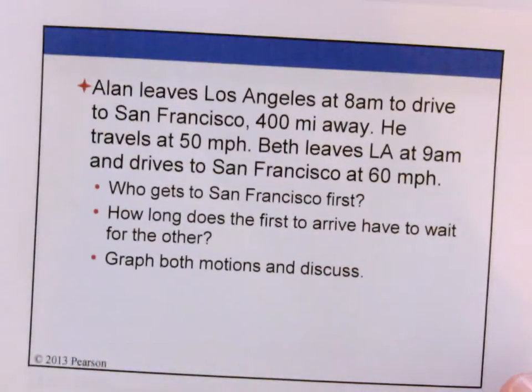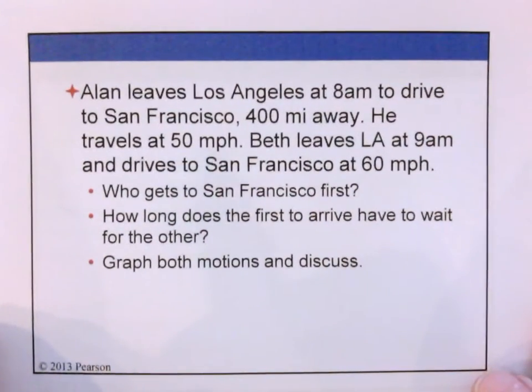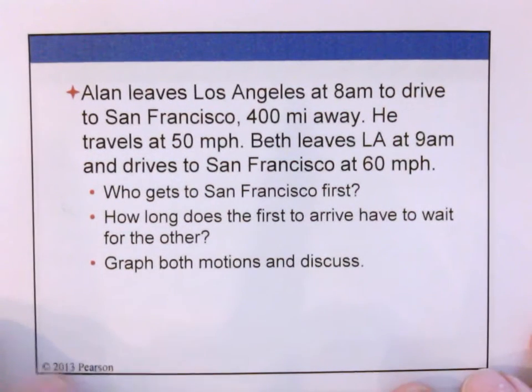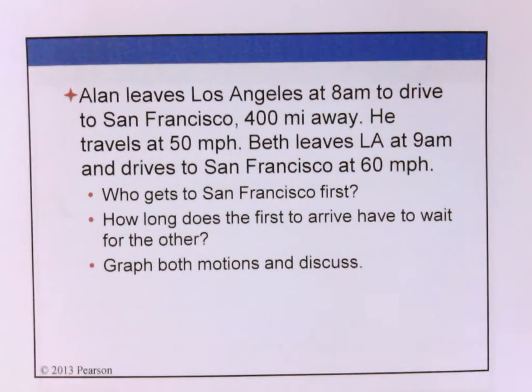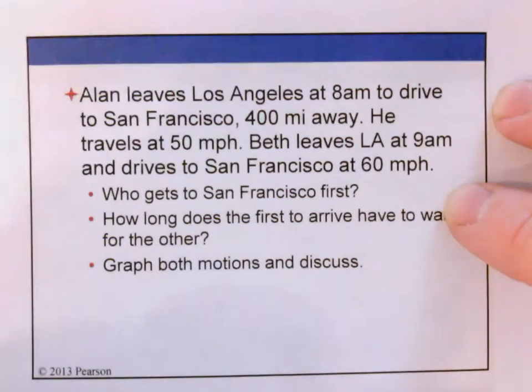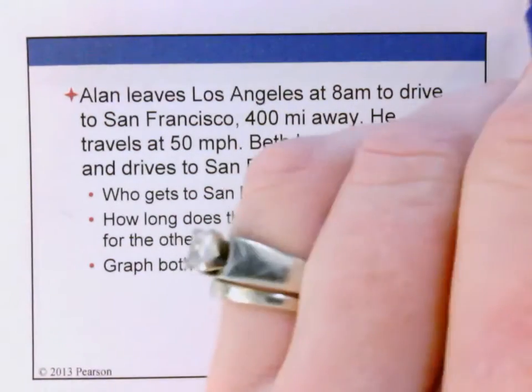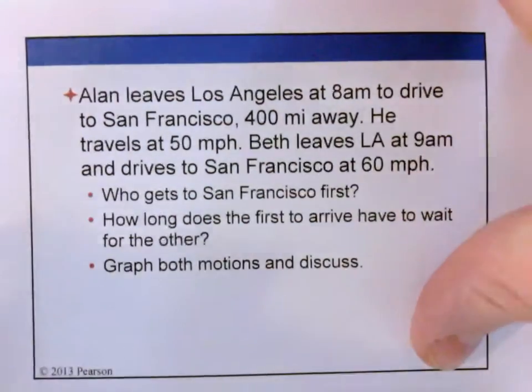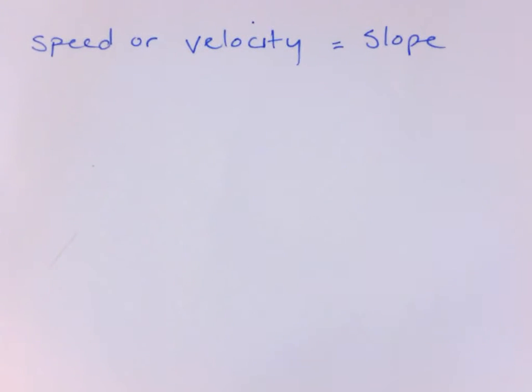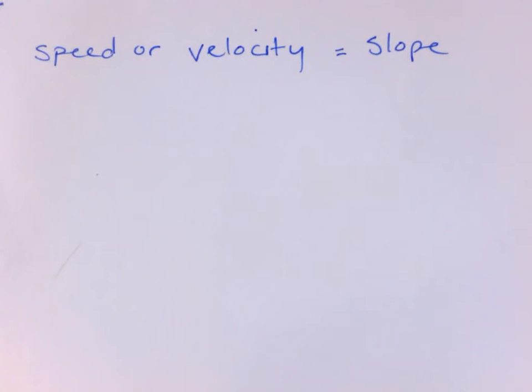Your next slide is about Alan and Beth, but I'd like to pause in the notes here. If you go to your last page, you've got some blank space, and I'd like to insert some new notes because we need to talk about average versus instantaneous speed as we defined them on the first couple pages. We now have this idea of slope, so speed or velocity is the slope of the position versus time graph, and we want to talk more about that.